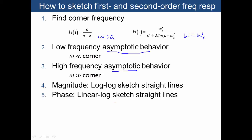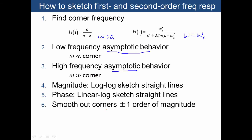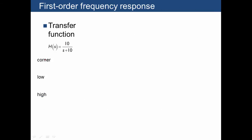Then we plot the phase linearly but still against log frequency — again ending up with straight lines. Finally, we smooth out the corners in the transition zone, about plus or minus one order of magnitude from the corner. Let's take a look at the example transfer function 10 over s plus 10. It's first order, with a corner at 10.